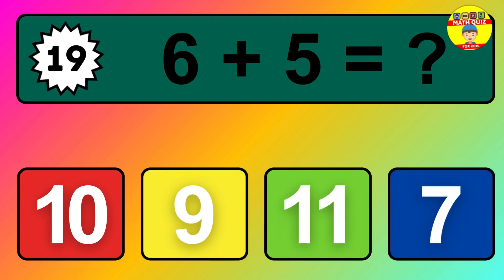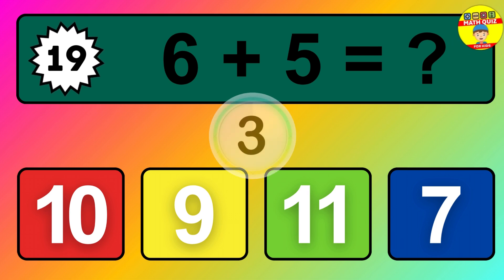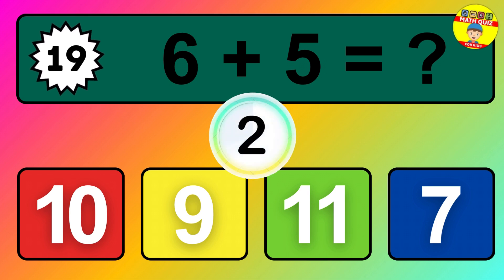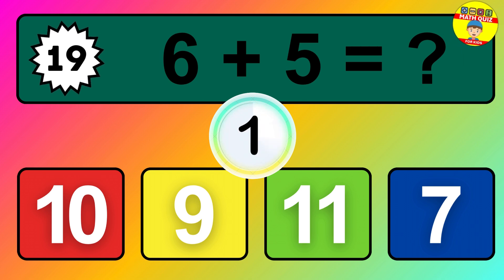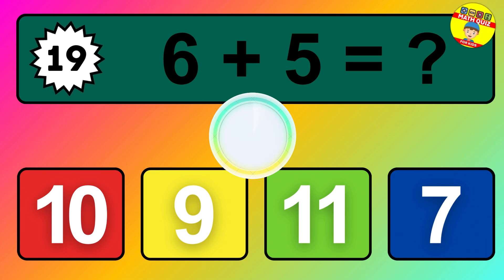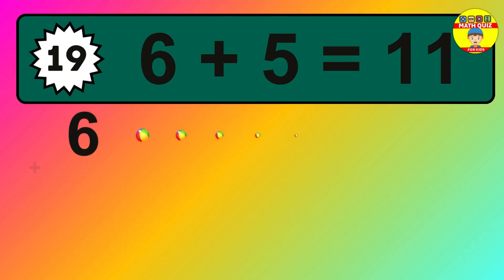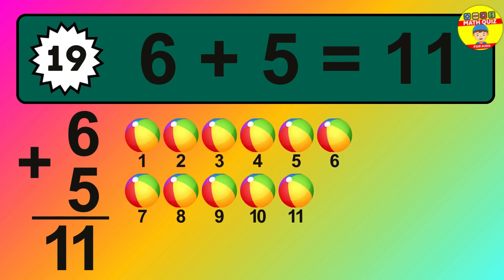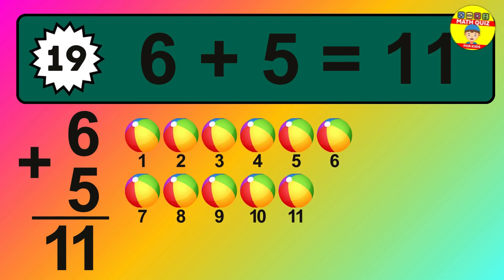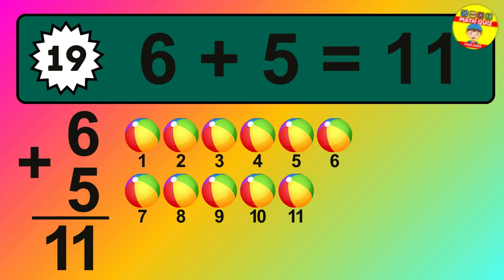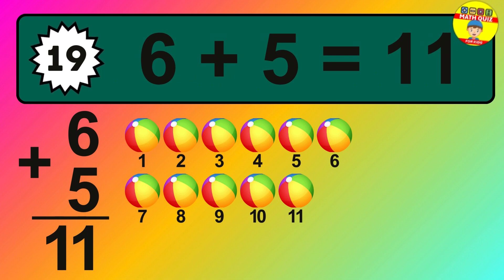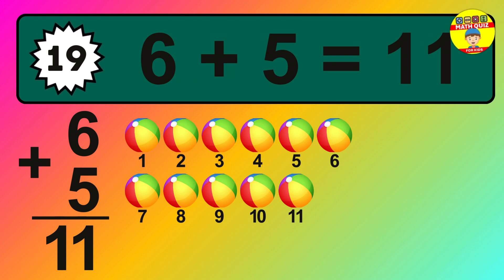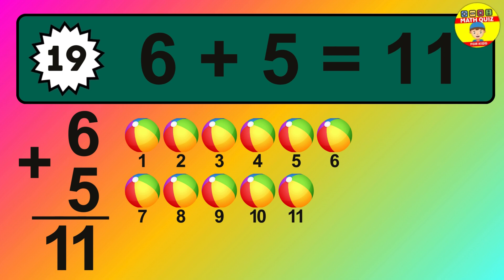Question 19. 6 plus 5 equals what? So the answer is 6 plus 5 is 11. Let's count it: 1, 2, 3, 4, 5, 6, 7, 8, 9, 10, 11.